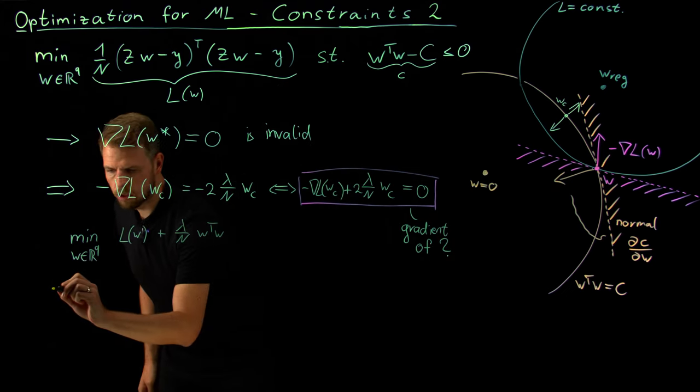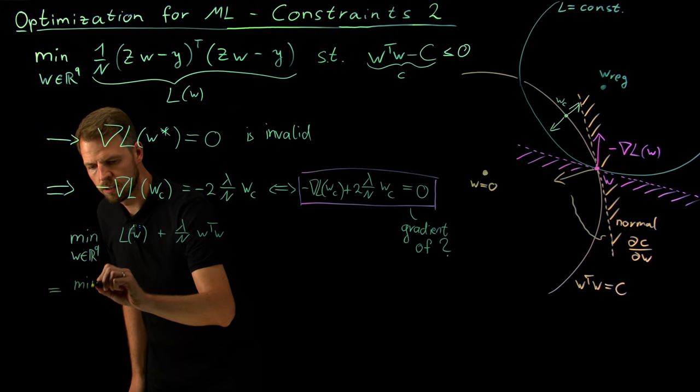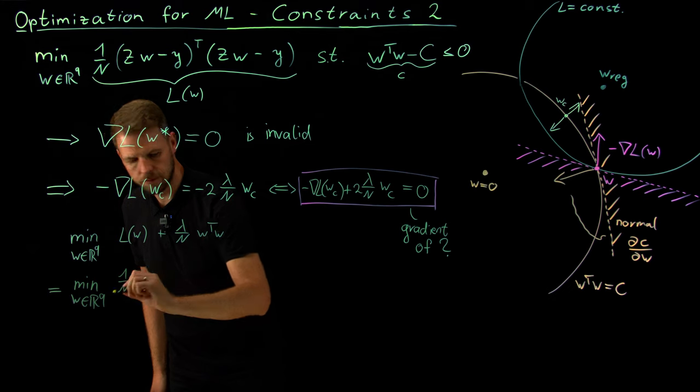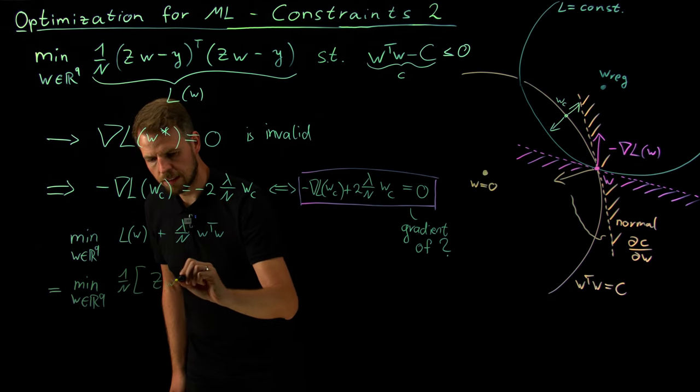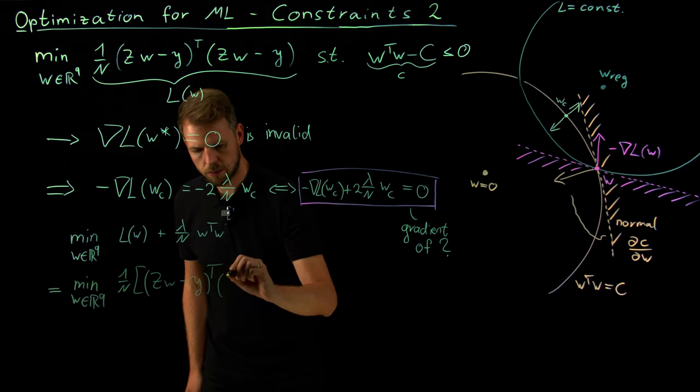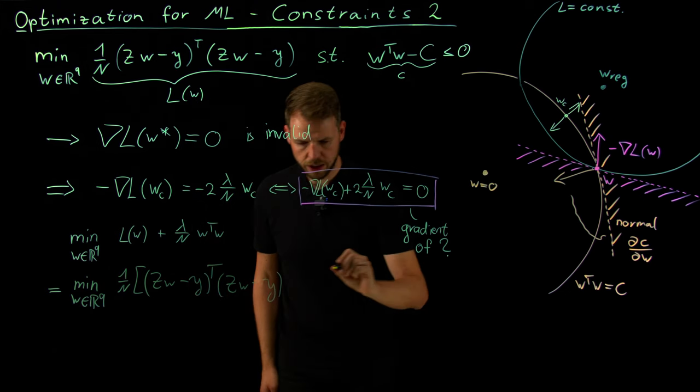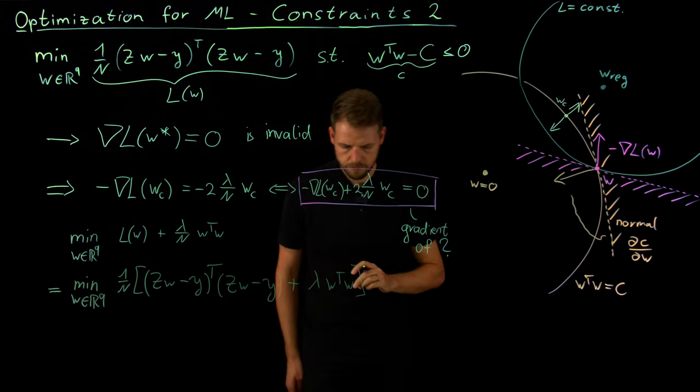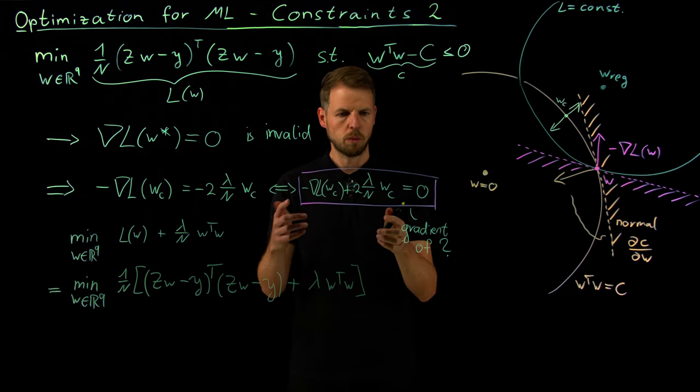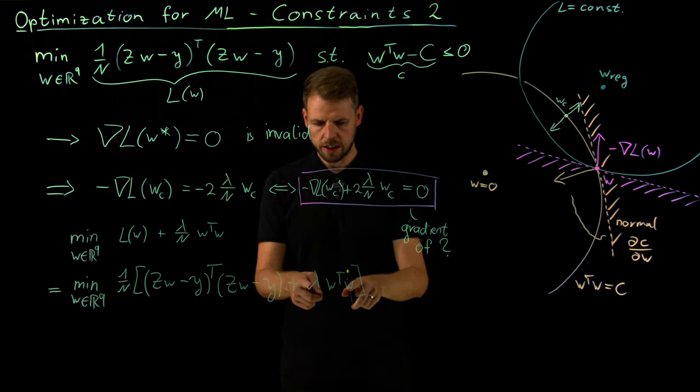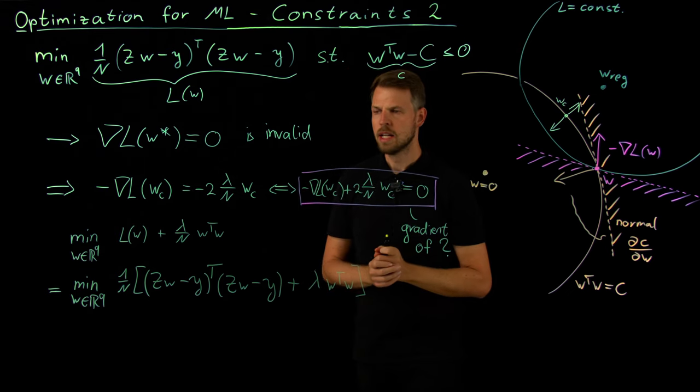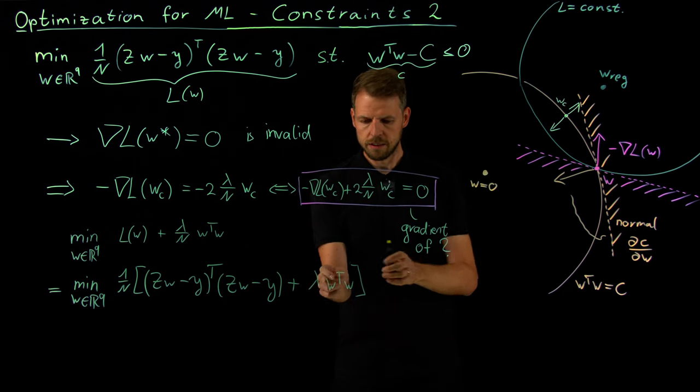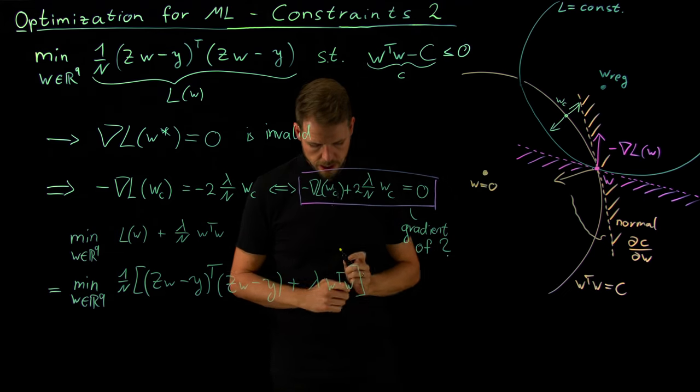And so if I can rewrite this once more, and then I arrive back at what I had in the beginning, minimize over w. And now I'm reusing this one, 1 over n, (Zw - y) transpose times (Zw - y). And now you see why I've picked the constant in the way I did. Plus lambda times w transpose w. And so you see, now this is what happens. We have transformed our constraint into an additional term, a regularization term, in our loss function. And we've seen this before. This is precisely what we do in ridge regression. We add a regularization term that somehow penalizes weights that move too far away from zero. And so the constraint, so let's draw the line here, this one is very closely interconnected with this point.